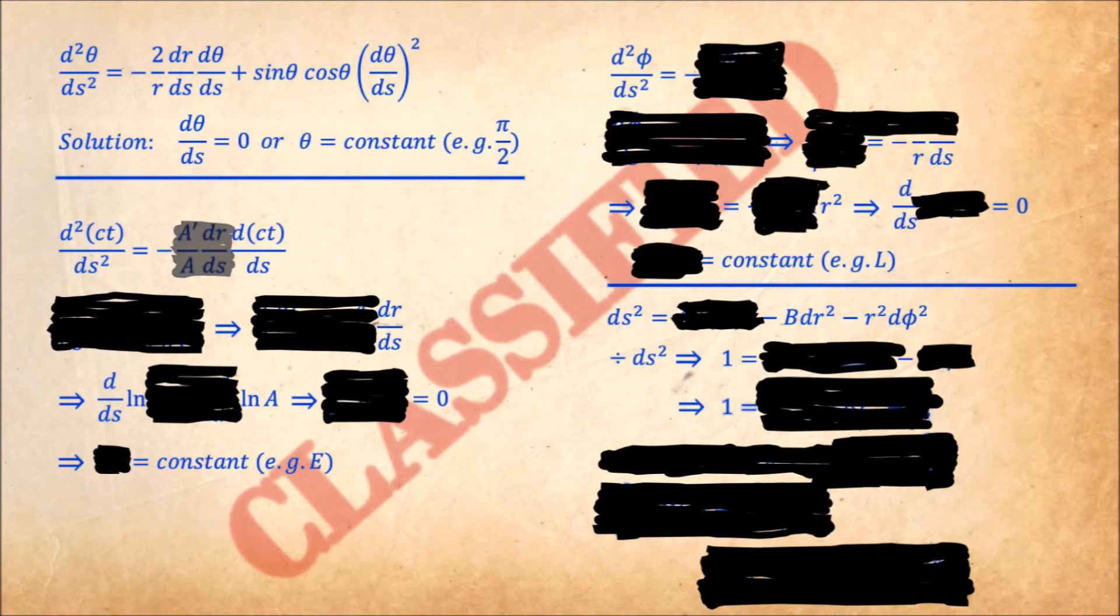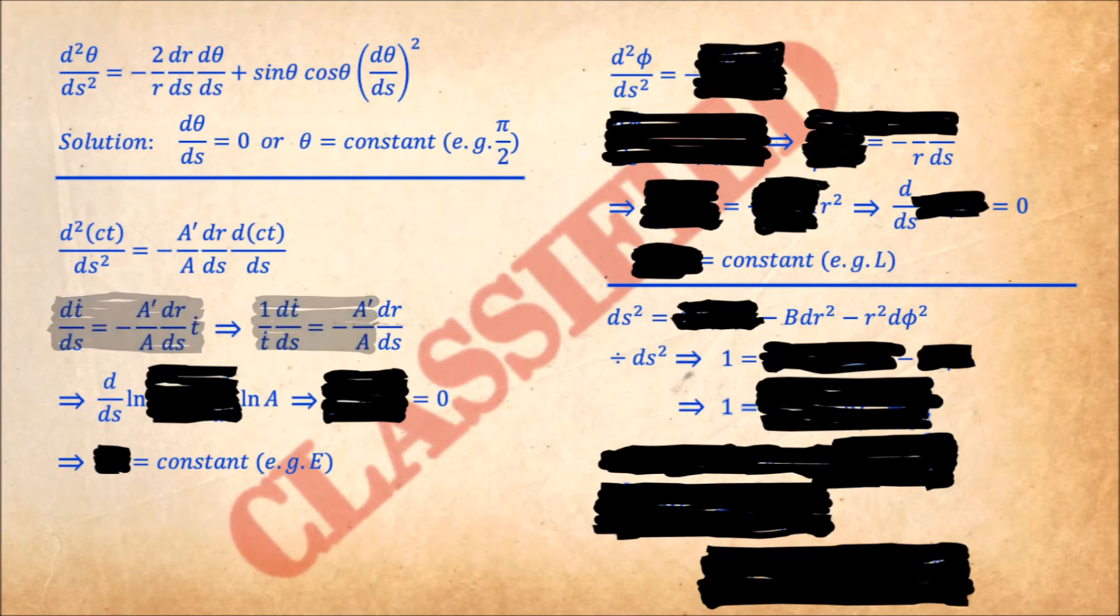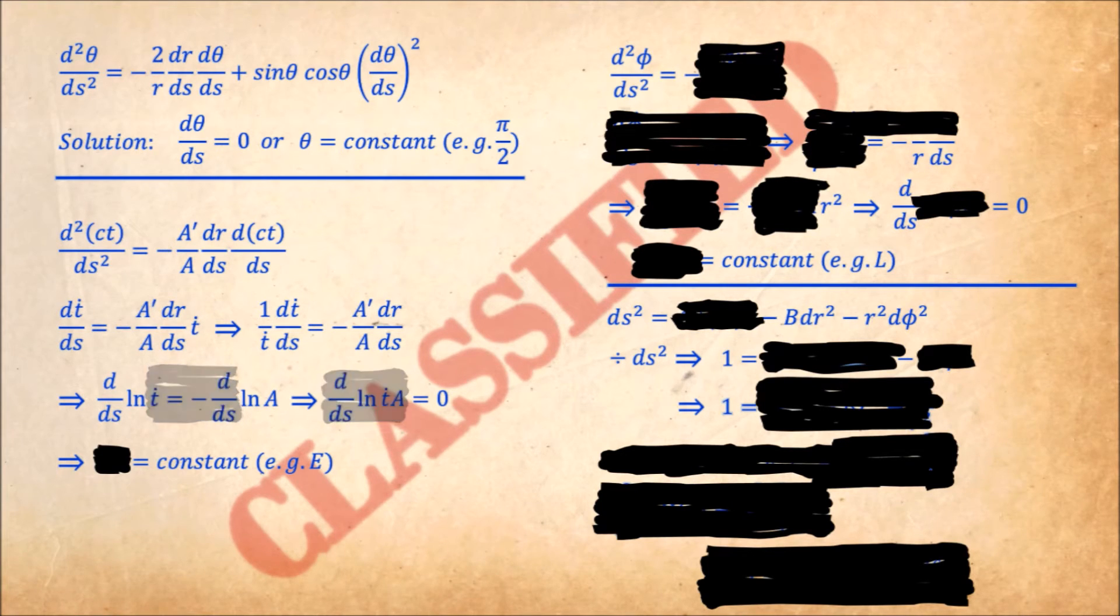Next, the equation for t takes on this form. In terms of t dot, it can be written like this, which is merely the derivative of a logarithm. This equation says that t dot a is a constant. We'll call it a capital E.